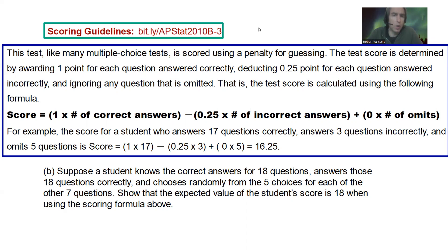Alright, now let's look at the question down below, okay? Suppose a student knows the correct answers for 18 questions, 18 questions. Answer those 18 questions correctly, and chooses randomly from the five choices for each of the other seven questions.